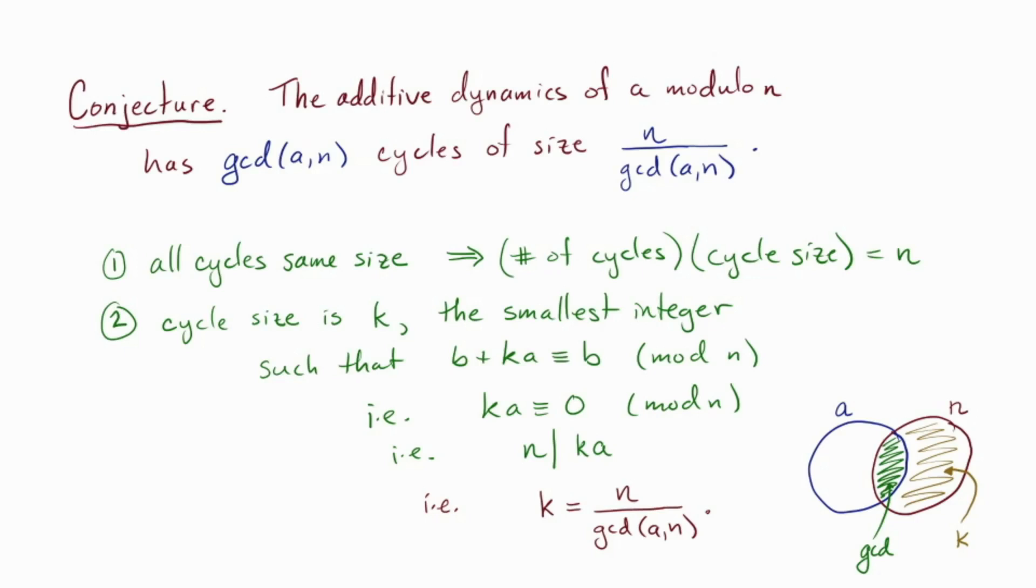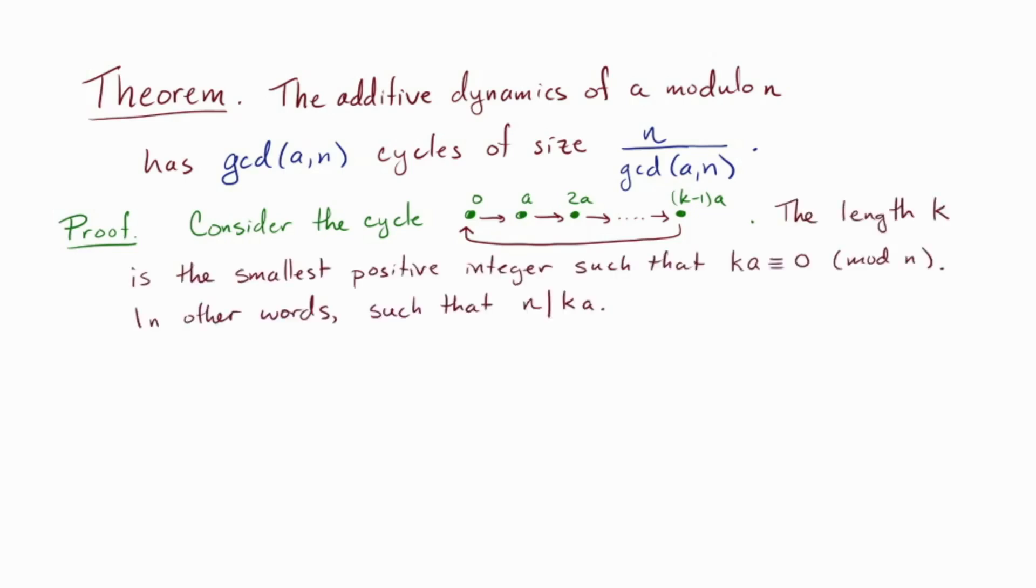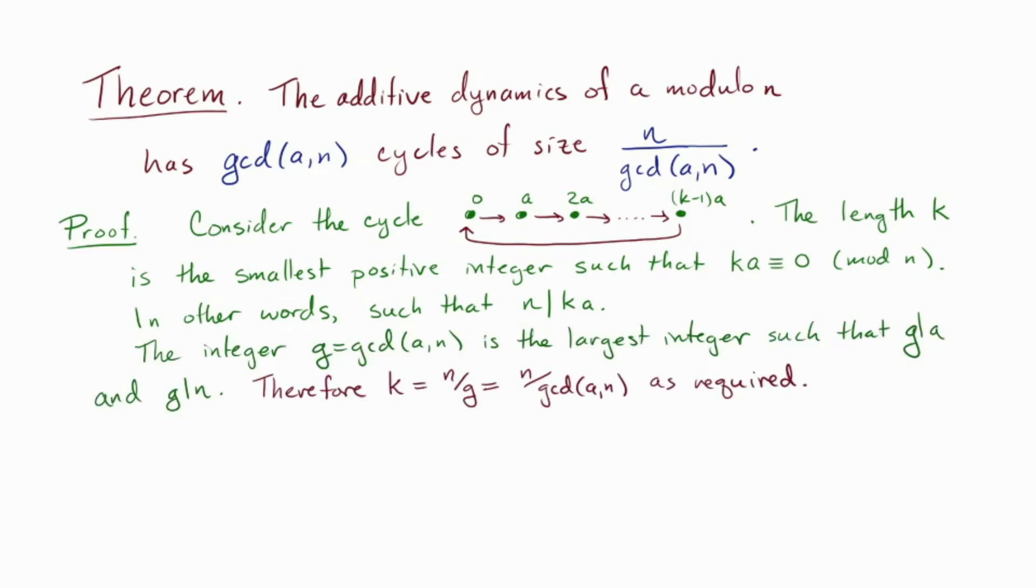Okay, so our conjecture is the theorem. Let's write it out neatly. Theorem. The additive dynamics of a modulo n has gcd(a,n) cycles of size n over gcd(a,n). Proof. Consider the cycle that contains zero. It looks like this. The length k is just the smallest positive integer such that ka is congruent to zero mod n. In other words, such that n divides ka. The integer g, defined as gcd(a,n) is the largest integer such that g divides both a and n. Therefore k equals n over g as required. Since all cycles are the same size, the number of cycles times the cycle size must give n. Therefore the number of cycles is gcd(a,n). And we are done.